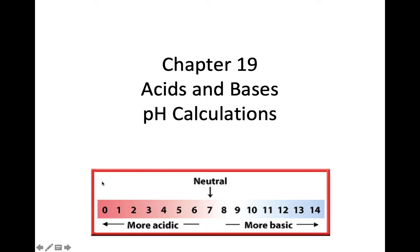So if we look at our little scale of acids and bases, if you remember from middle school or biology last year, neutral is 7. Anything less than 7 is an acid, and everything greater than 7 is a base. The scale usually goes between either 1 or 0 to 14.